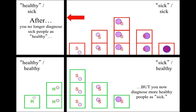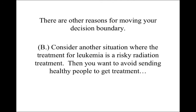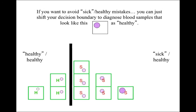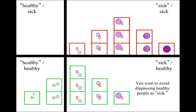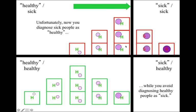There are other reasons for moving your decision boundary. Consider a situation where the treatment for leukemia is a risky radiation treatment — then you want to avoid sending healthy people to get treatment. If you want to avoid healthy people being labeled as sick, you can shift your decision boundary to diagnose blood samples that look borderline as healthy. You could shift it all the way over so nobody gets unnecessary treatment. But if you shift it all the way over, you're not erroneously treating people who are actually healthy, but now there are six people who will be untreated and therefore die.